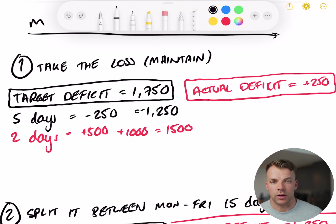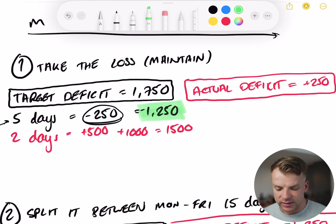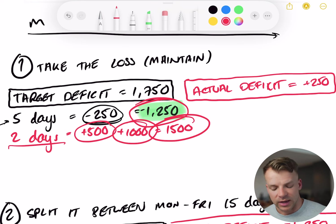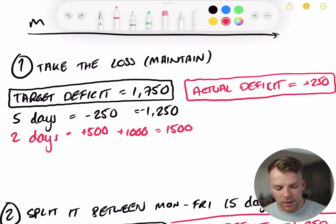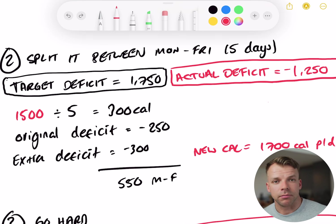So number one, you can just take the loss. I say take the loss in brackets. What I really mean is maintain your weight. If you had five days at a 250 calorie deficit, you would achieve a 1,250 calorie deficit. The two days that you were eating on the weekend, you have Saturday of 500 calories in the surplus and you have Sunday at a thousand calories in the surplus. That adds up to 1,500 calories. The 1,250 calorie deficit and the 1,500 calorie surplus level out and give you the actual deficit, which is actually a surplus of 250 calories. So your week on average is 250 calories above your maintenance.